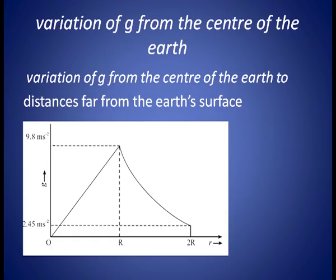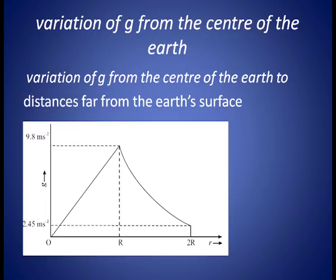We can represent this variation of g graphically. At the earth's surface (distance = r), g = 9.8 m/s². Going deeper inside the earth, g decreases linearly. At distances greater than r (outside earth, up to 2r), g decreases in a curved manner, following the inverse square law.